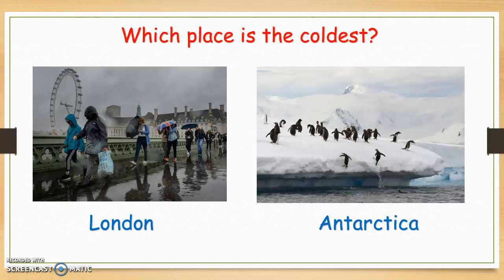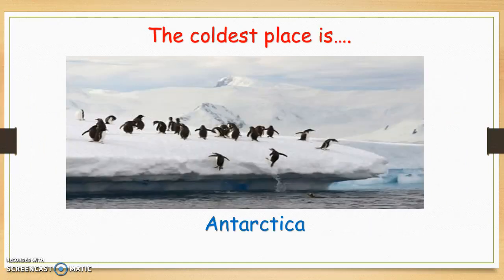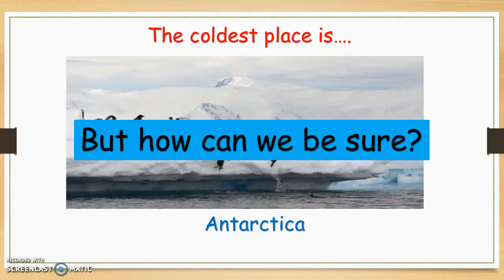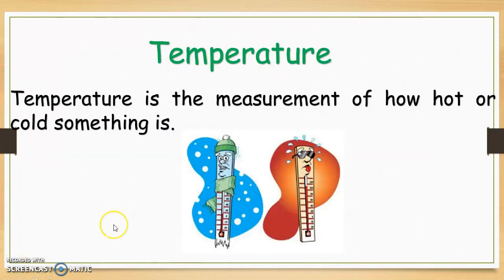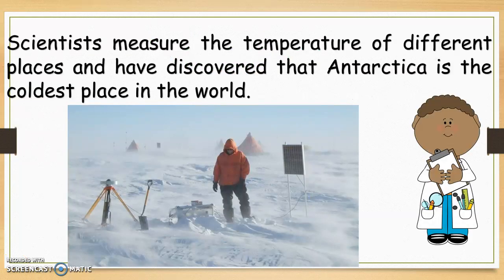Have a look at the picture here of London and Antarctica. We studied Antarctica in term one. Which place is the coldest? Yes, you are right - the coldest place is Antarctica. But how can we be sure of this? Temperature is a measurement of how hot or cold something is. Scientists measure the temperature of different places and have discovered that Antarctica is the coldest place in the world.